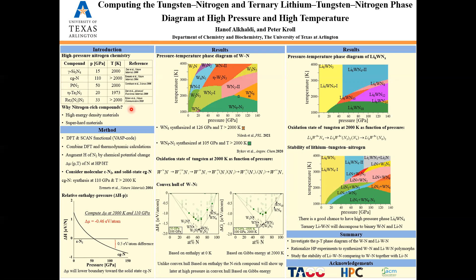We started our method with density functional theory. DFT was implemented to optimize the structures, and we combined DFT calculations with thermodynamic calculations. We calculated the enthalpy by the change of the chemical potential of nitrogen at high pressure and high temperature, considering the molecular nitrogen epsilon phase and solid cubic gauche phase synthesized at 110 gigapascals and a temperature of 2,000 Kelvin.